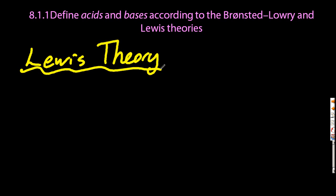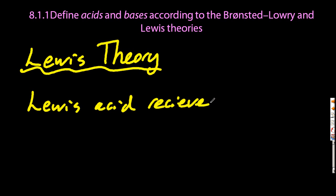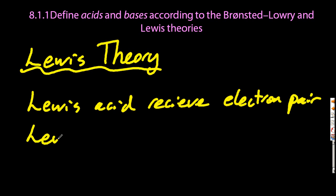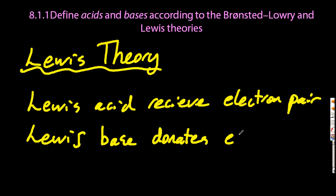Moving on to the Lewis theory. Lewis apparently was a real pain — that's why he never won the Nobel Prize and didn't have many friends. A Lewis acid receives an electron pair, and a Lewis base donates an electron pair.